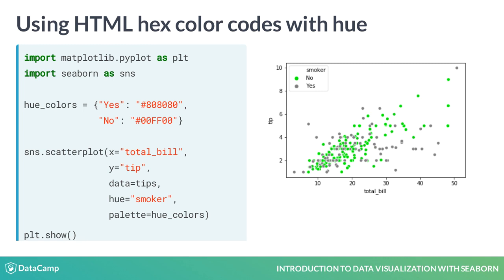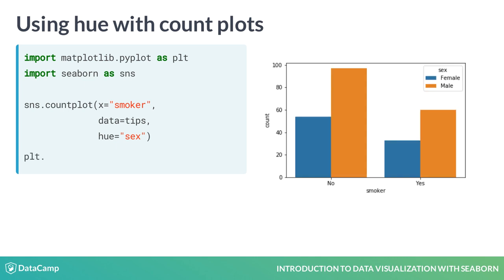As a final note, hue is available in most of Seaborn's plot types. For example, this count plot shows the number of observations we have for smokers vs. nonsmokers, and setting hue equal to sex divides these bars into subgroups of males vs. females. From this plot, we can see that males outnumber females among both smokers and nonsmokers in this dataset.